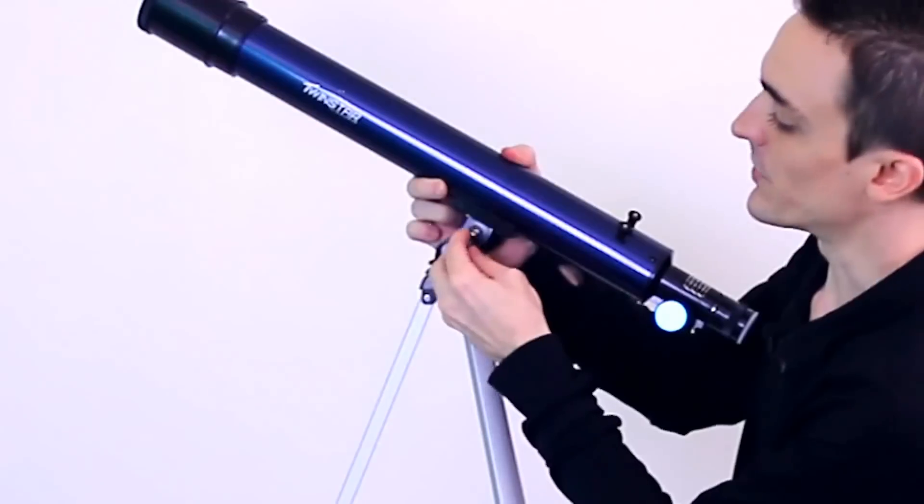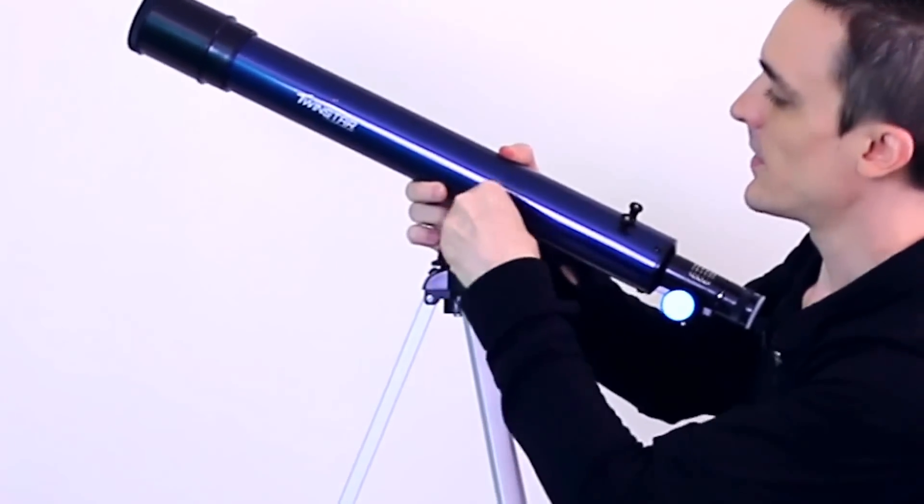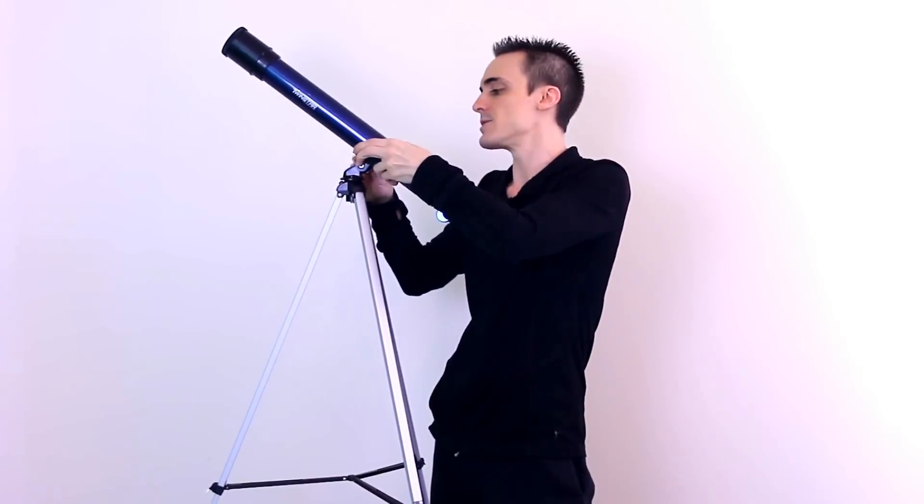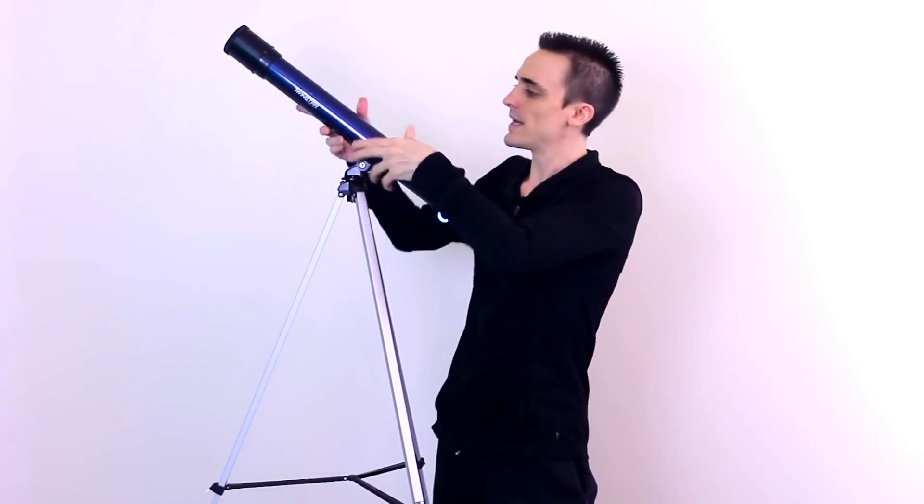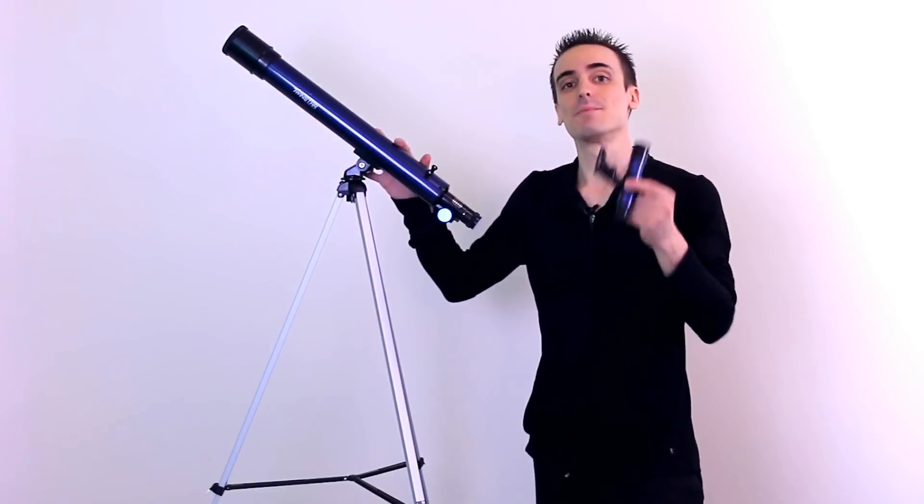And replace the washer on the other side. Now when you tighten it you don't want to get it too tight because you're going to want to be adjusting this from time to time. So just get it kind of snug and that's about it. Once you've got that done it's on to step three.